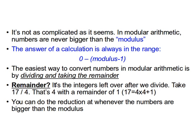The easiest way to convert numbers in modular arithmetic is by dividing and taking the remainder. The remainder is the integers left over after we divide. For example, if we divide 17 by 4, the remainder is 1, because 17 equals 4 times 4 plus 1, i.e. 16 plus 1. We always do this reduction whenever the number is bigger than the modulus.